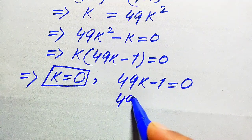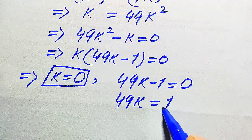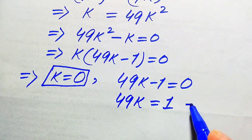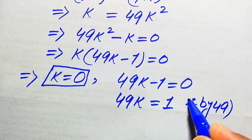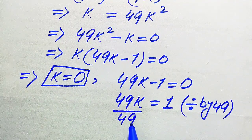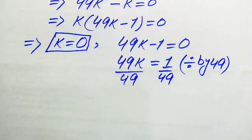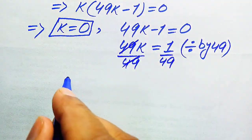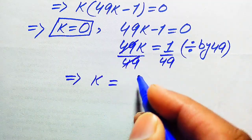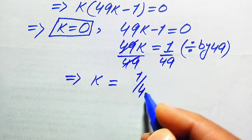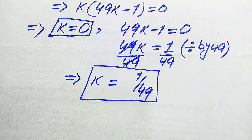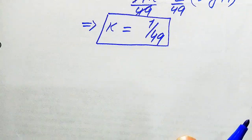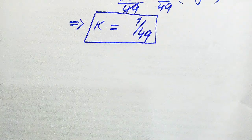The first root is k equals 0. For the second case, 49k minus 1 equals 0, we move minus 1 to the right-hand side to get 49k equals 1. Dividing both sides by 49, we get k equals 1 over 49. So the two roots of the given equation are k equals 0 and k equals 1/49.